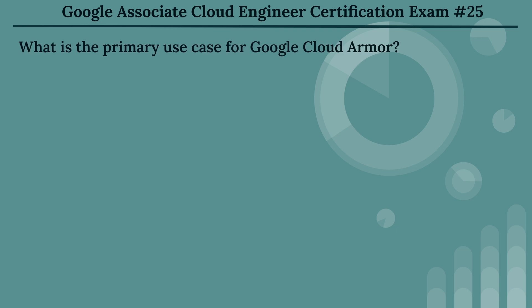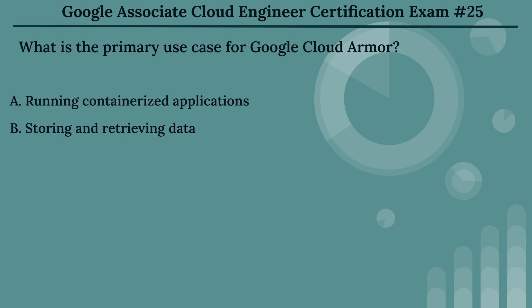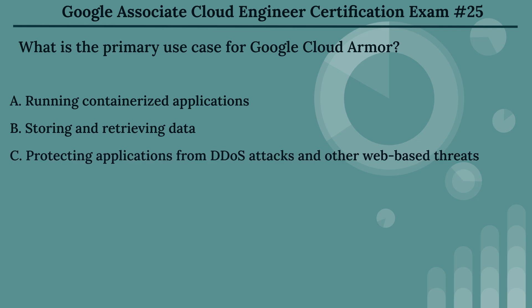The twenty-fifth question: what is the primary use case for Google Cloud Armor? The options are: Option A, running containerized applications. Option B, storing and retrieving data. Option C, protecting applications from DDoS attacks and other web-based threats. Option D, managing cloud billing.